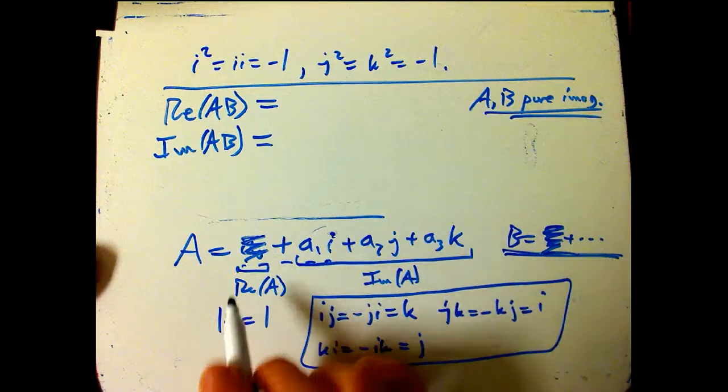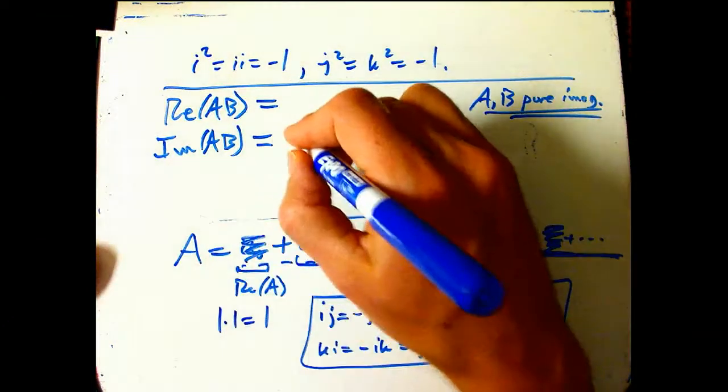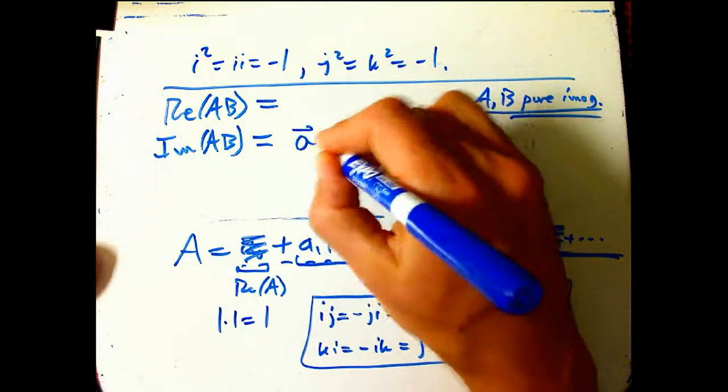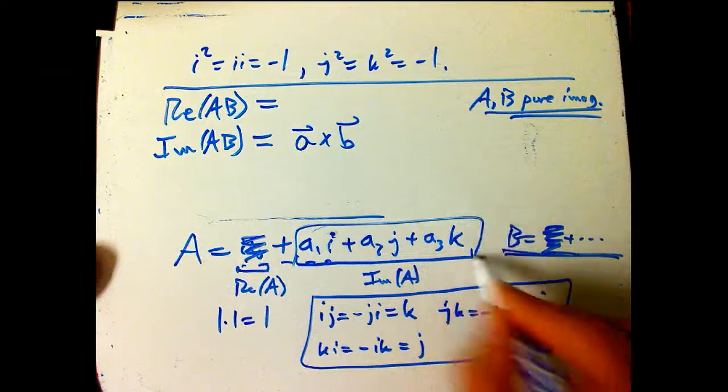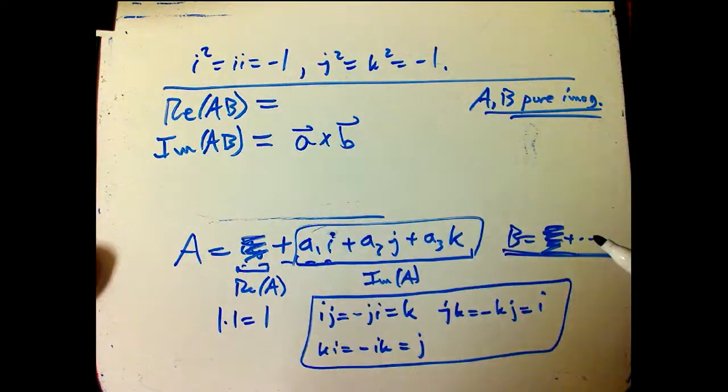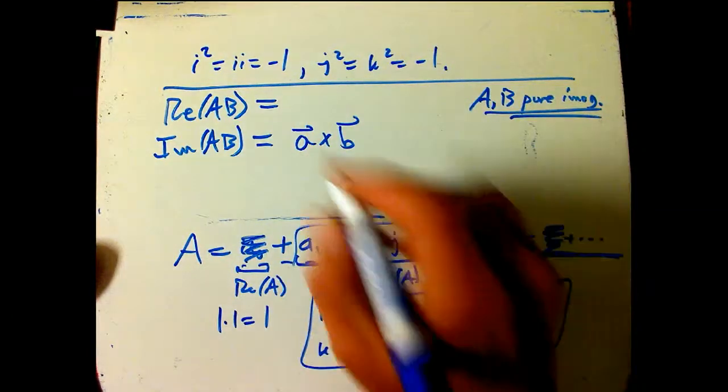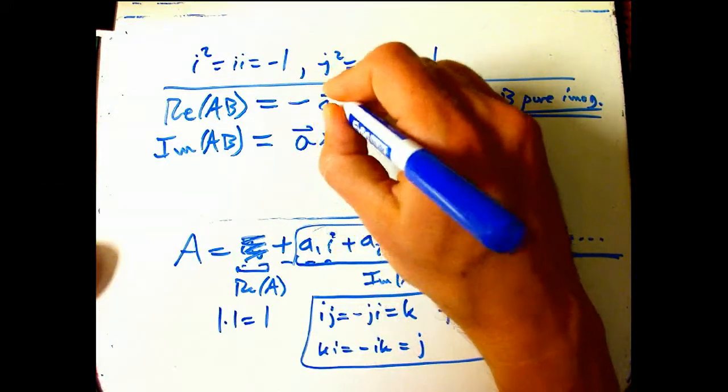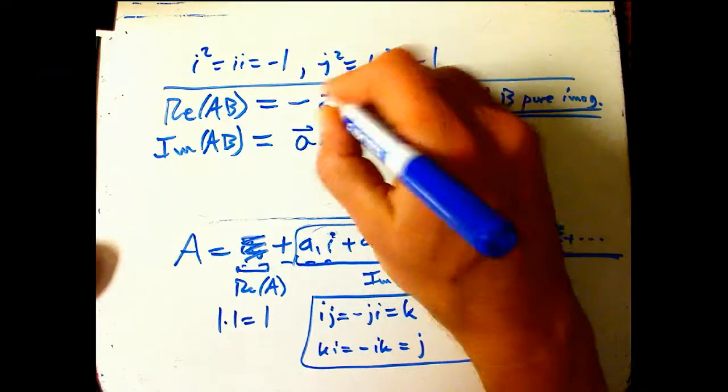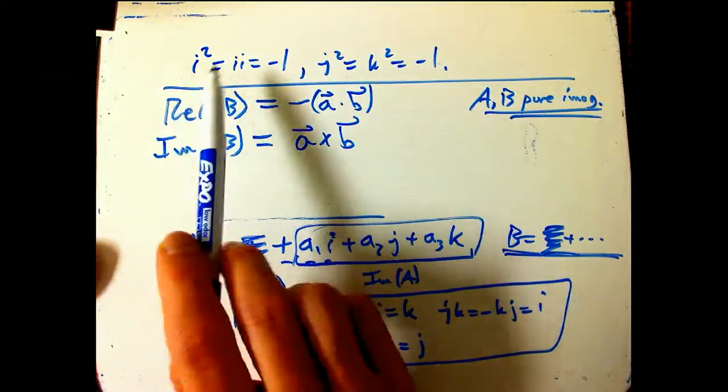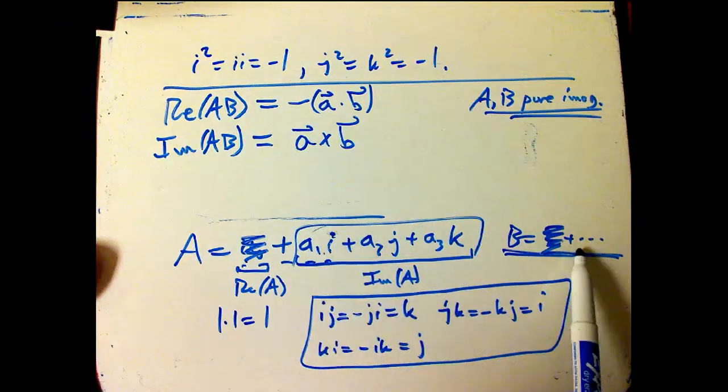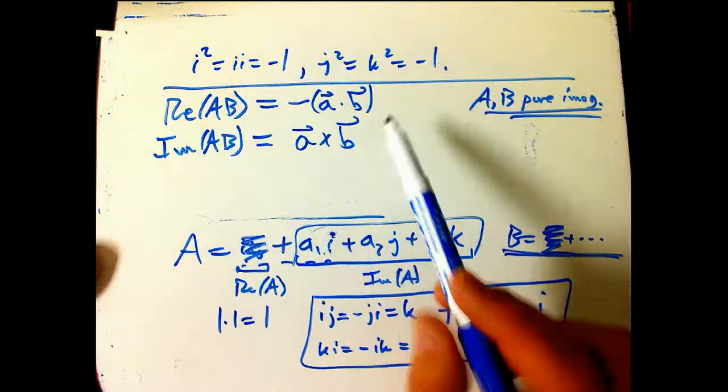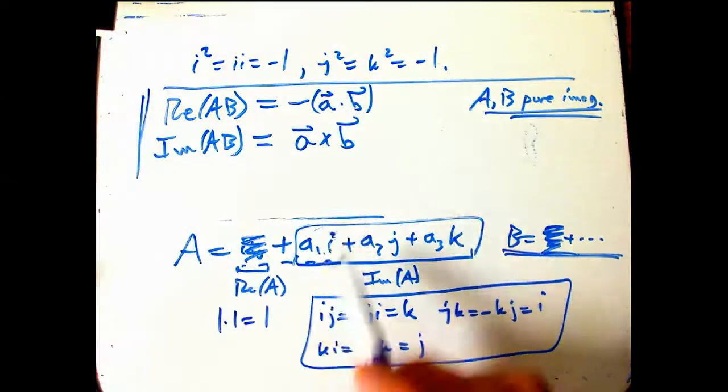It's a pretty easy exercise to show that the imaginary part of that is exactly just, if you think of this as a vector and B as a vector, it's just the cross product, with the i's, j's, and k's in the usual way. And the real part is super cool. It's just minus the dot product of those vectors. Because what's the only thing that lives in the real part? It's where you take, like, i times i, and you'll get a minus. So, that's a good exercise to do.